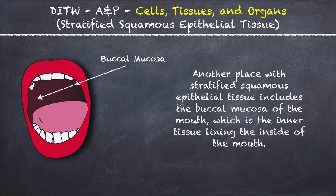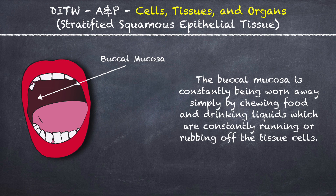Another place with stratified squamous epithelial tissue includes the buccal mucosa of the mouth, which is the inner tissue lining the inside of the mouth. The buccal mucosa is constantly being worn away simply by chewing food and drinking liquids which are constantly running or rubbing off the tissue cells.